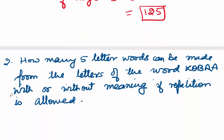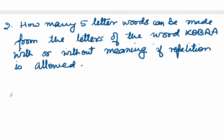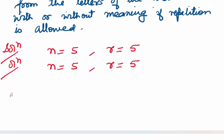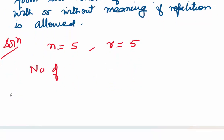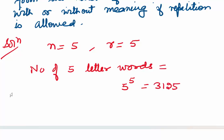Now if we have to make 5-letter words from the 5 letters of COBRA with repetition allowed, then n = 5 and r = 5. Number of 5-letter words = 5⁵ = 3125.